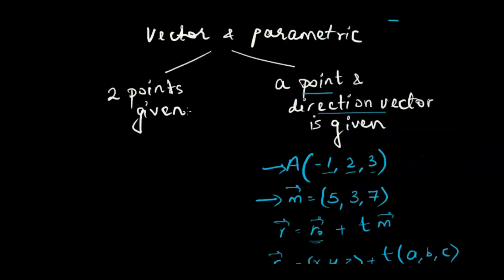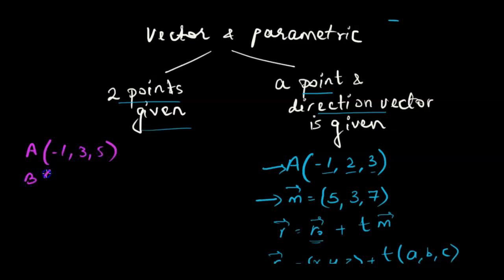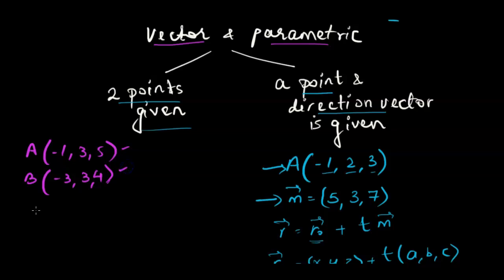Now let's learn how to write down the vector and parametric equation when two points are given. Let's say we're given point A at negative 1, 3, 5, and point B at negative 3, 3, and 4, and we're supposed to write down the vector and parametric equation. When two points are given, finding the direction vector is a necessity, so we would first find that out.